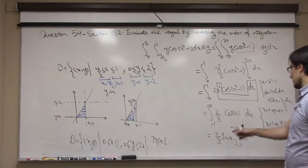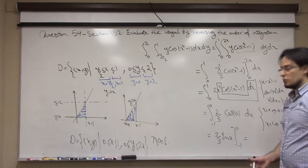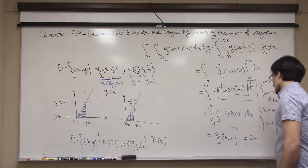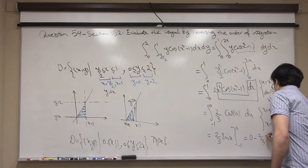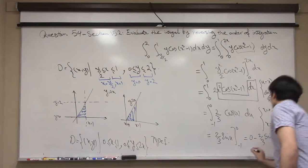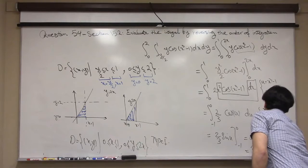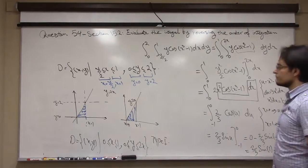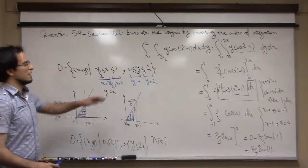Applying the fundamental theorem of calculus: sin(0) = 0, so the result is 0 − (2/3) sin(−1). Since sin(−1) = −sin(1), this simplifies to (2/3) sin(1).